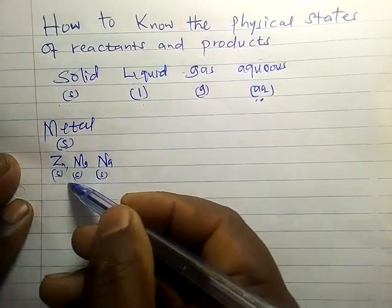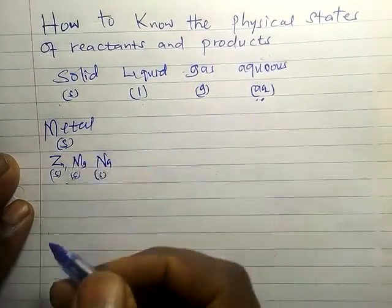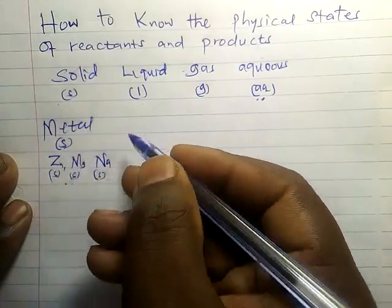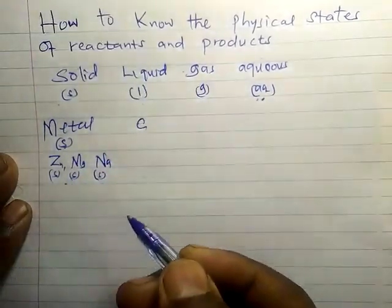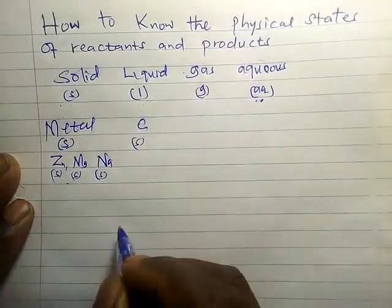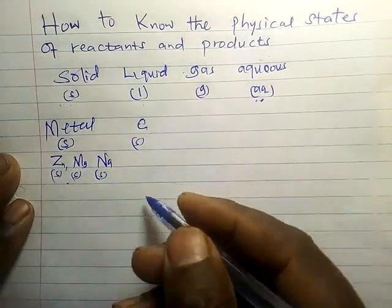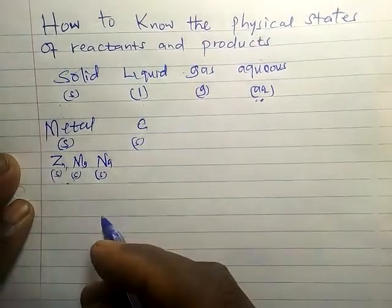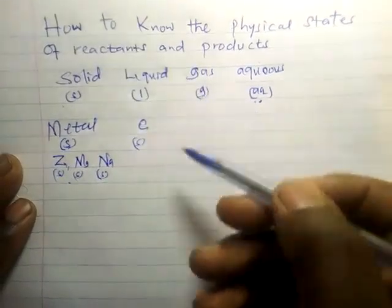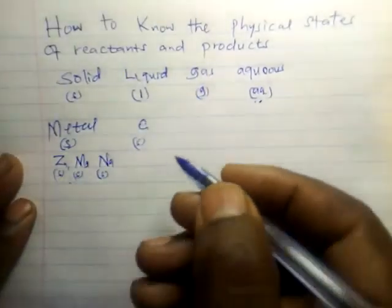For metals, all of them they are solids. Like carbon — you know carbon (charcoal) is a solid. When it comes to gases, like oxygen and chlorine, you should know those are gases and you put G.